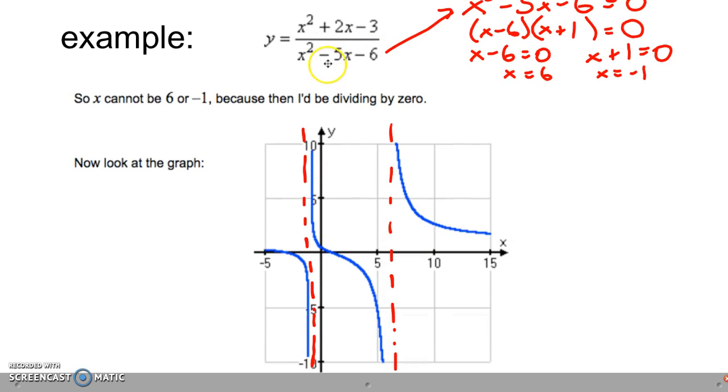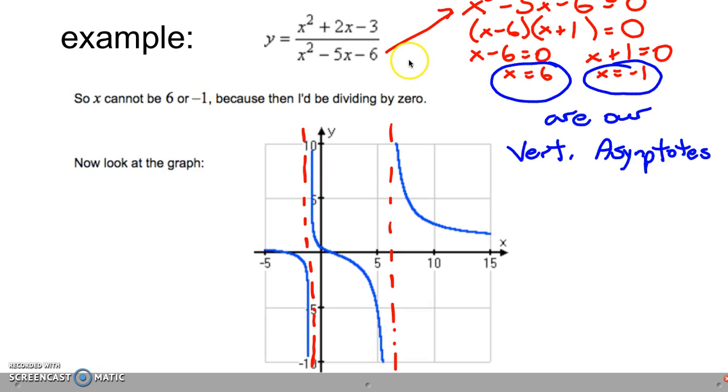We make our mini equations and we solve them. And so x equals 6 and x equals negative 1 are our solutions. Those solutions are our vertical asymptotes. Take a look at the graph of this rational function. We have a vertical asymptote at x equals 6 right here and x equals negative 1 right here. To find the vertical asymptotes, take your denominator, set it equal to zero, and whatever kind of equation it is, solve it appropriately.